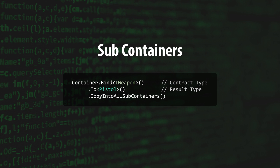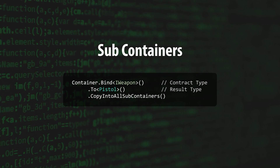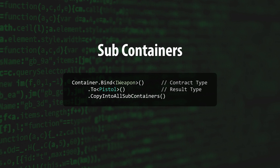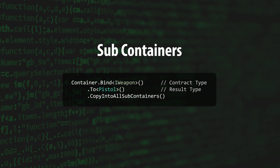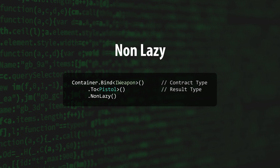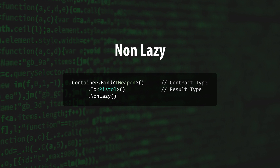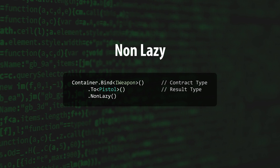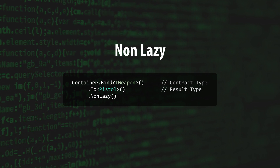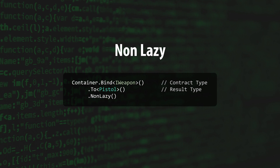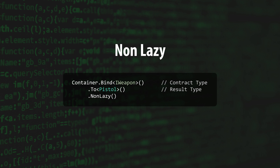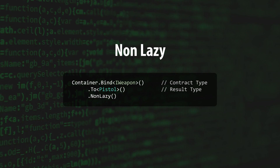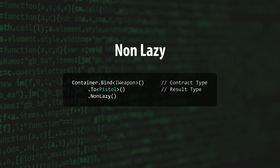The CopyIntoAllSubcontainers method will cause a binding statement to be inherited by subcontainers. Subcontainers are a more advanced topic that I'll cover in another video, so for now just know that this option exists. The final option is the NonLazy method. Adding NonLazy to a binding statement causes the container to create an instance of result type at startup. This is important because the container creates objects lazily when they're requested by the classes that need them, but sometimes you need a class to be created immediately, or you need to add a class to the container that is never injected and therefore would never be created. In these cases, NonLazy works wonders.